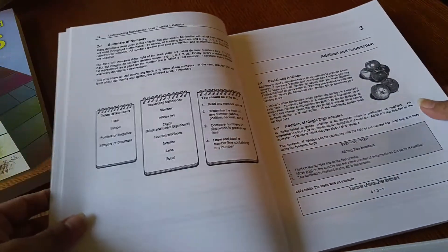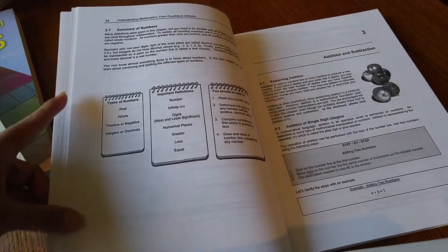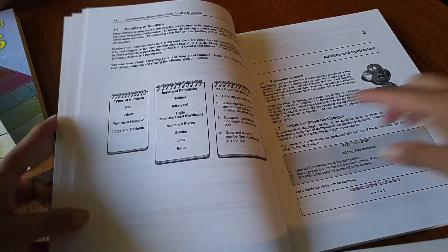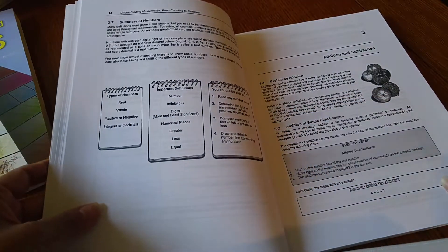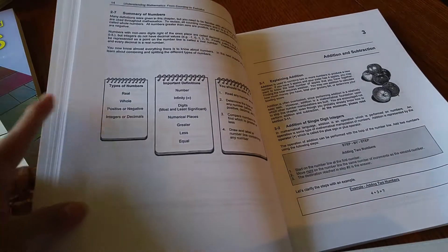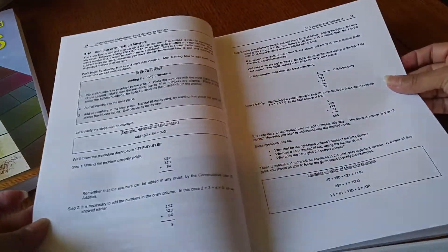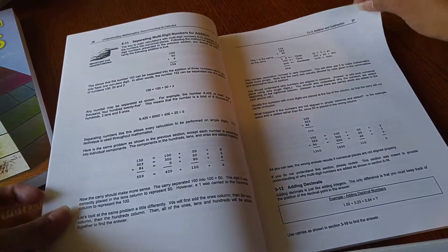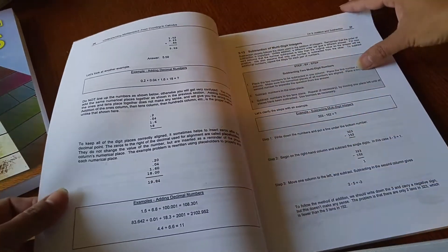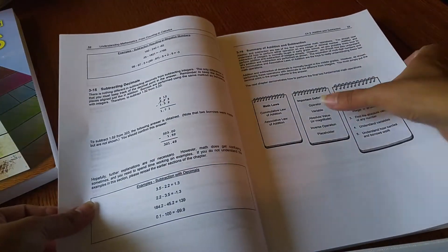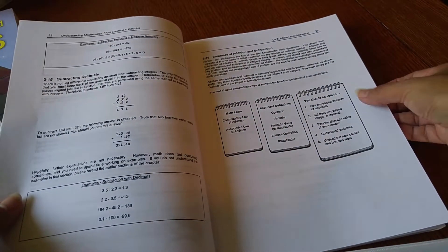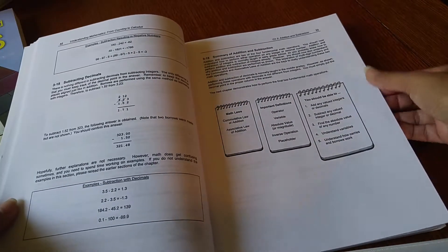And then at the end of each concept that they're learning, it shows a summary and then 'You should be able to,' and here's important definitions. And this one says types of numbers.